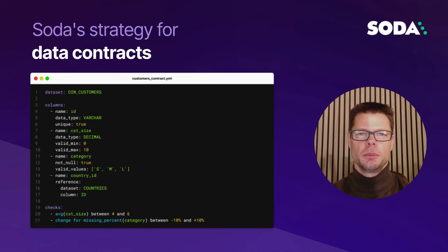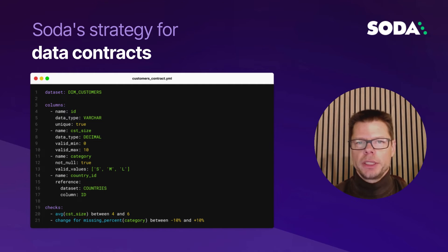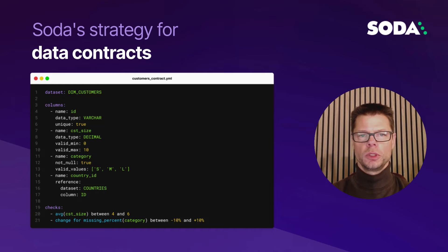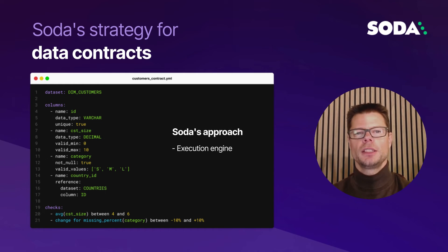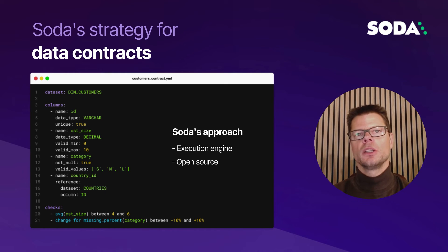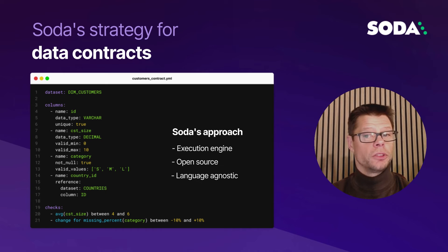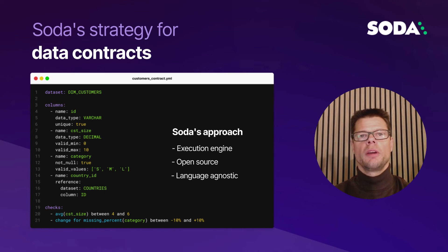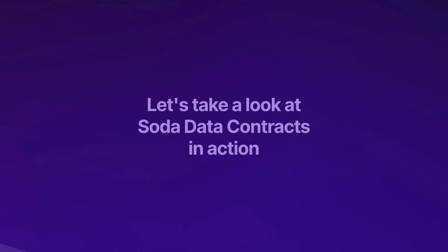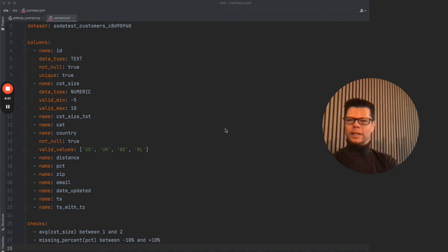As data producers take more ownership of their data, it's important to provide convenience to data engineers building pipelines. Data contracts are a new form of checking data quality in pipelines that fits much better with data producers. We've built an open-source execution engine for checking data quality via data contracts. The engine is what matters, not the contract language itself — whether you use the SODA data contract language or any other flavor, SODA will actively connect to all promising contract languages, making it a choice for the long run.